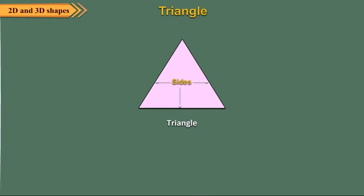Triangle. A triangle has three sides. It has three vertices or corners.